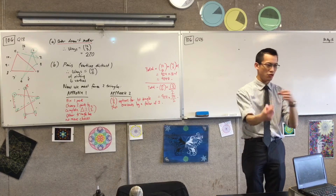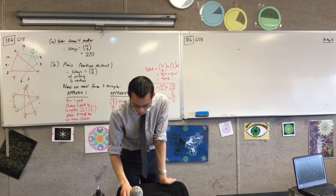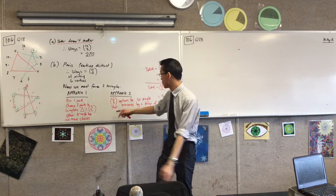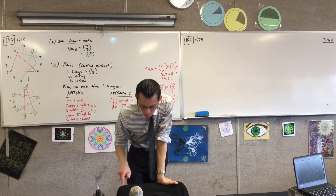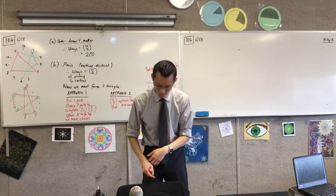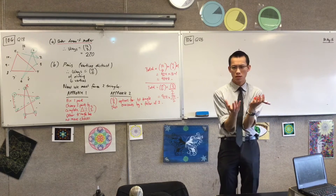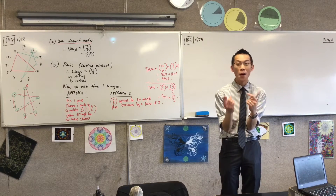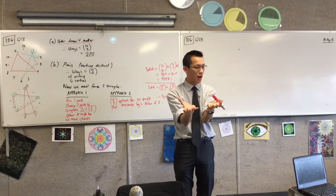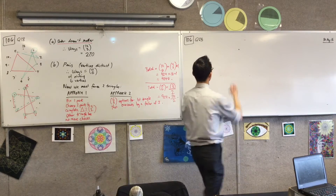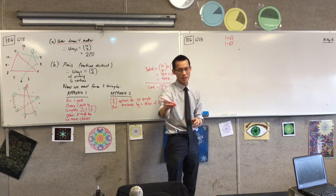Now let's look at part C — it has two parts, two halves of the same question. It asks: in how many of the 9240 pairs will the triangles not overlap, and in how many will they overlap? The clue that these are two halves of the same question is that they are complements — you're either one or the other. Together they must add up to 9240.